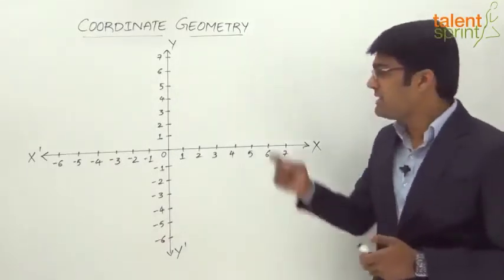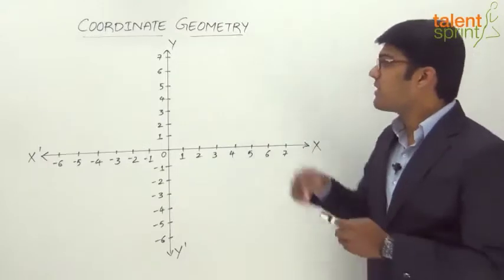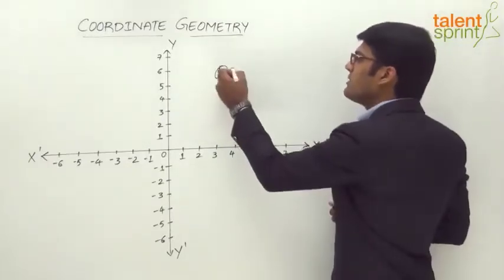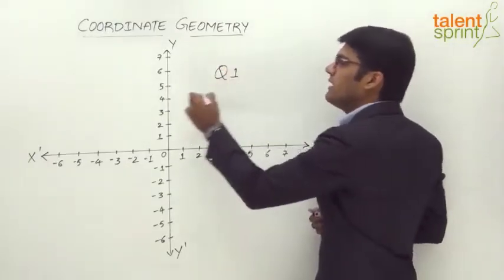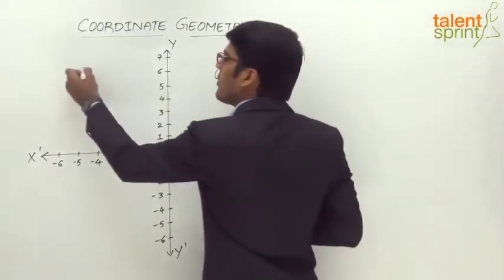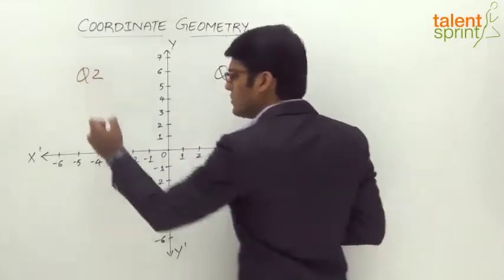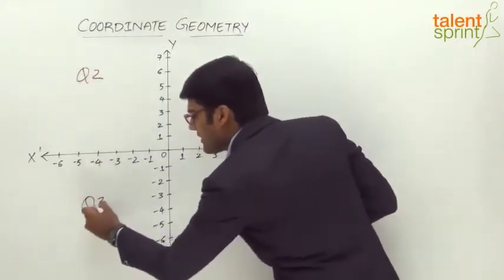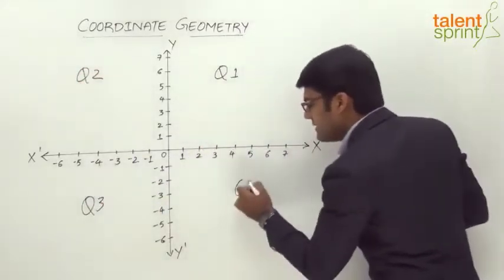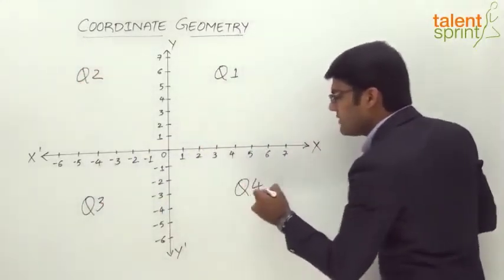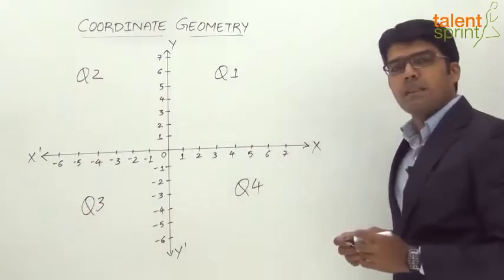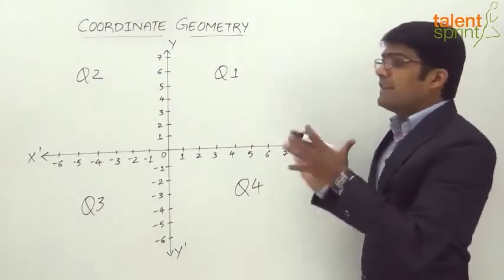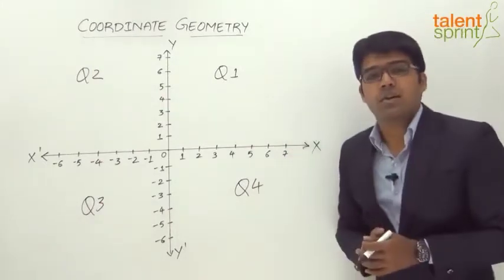We have four quadrants: quadrant 1, quadrant 2, the third quadrant, and quadrant 4. Now what is the difference in each of these quadrants?